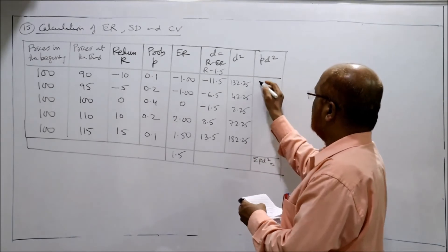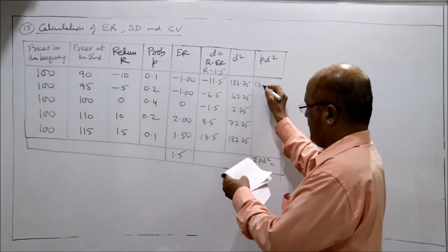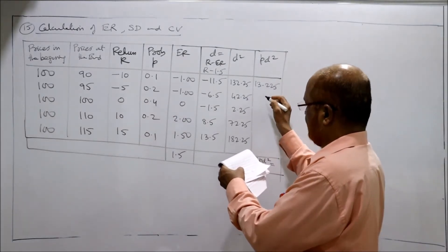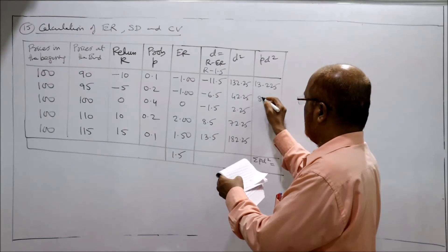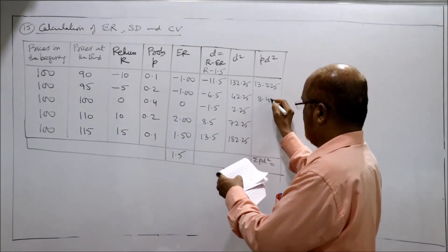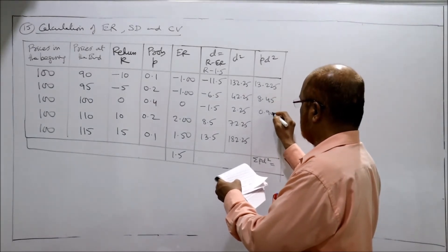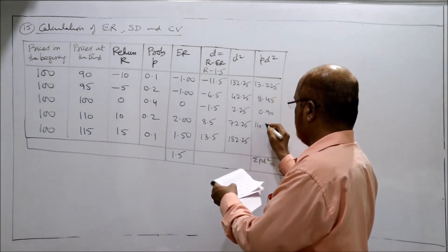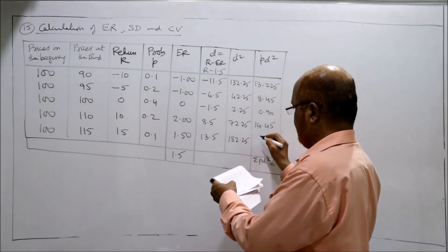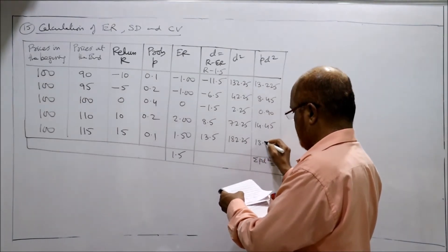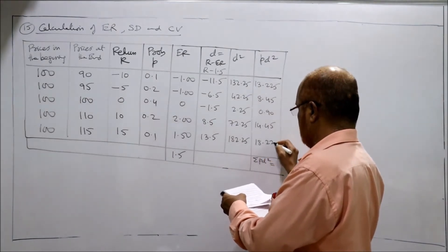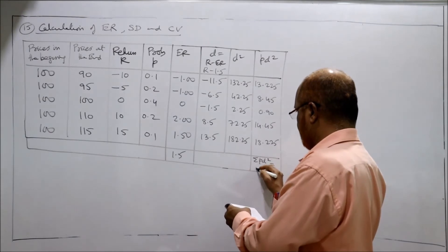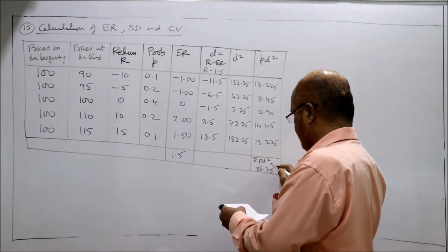Then PD squared values are 13.225, 8.45, 0.9, 14.45, and 18.225. The total is 55.2.